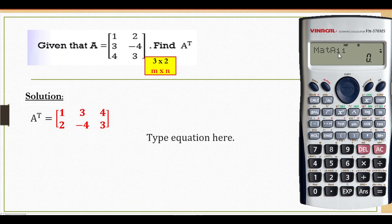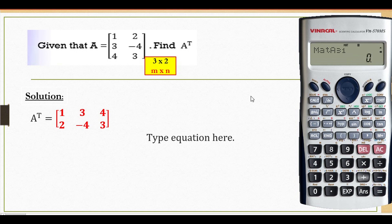Okay, after that enter element A 1,1 — so A 1,1 is 1, equal to. A 1,2 is 2. First row, second column. Then 2,1 — second row, first column — is 3. Then 2,2 — second row, second column — is negative 4, equal to. Then 3,1 — third row, first column — is 4. And 3,2 is 3. Press equal to. After that, press shift 4.